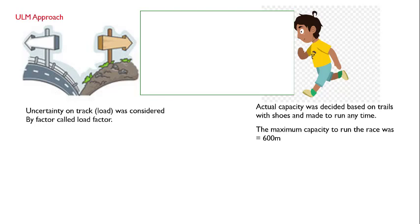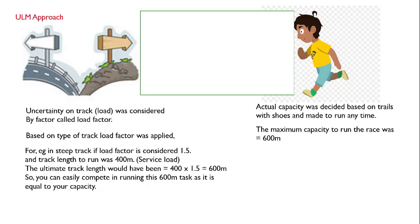Same thing in the ultimate load method for concrete structures: we consider uncertainty in loads such as dead load, live load, wind load, and earthquake load, and we assign certain load factors to those. Similarly in the race example, based on track length or the kind of track you are considering, a load factor is applied. Let me show how you incorporate this load factor based on type of track.